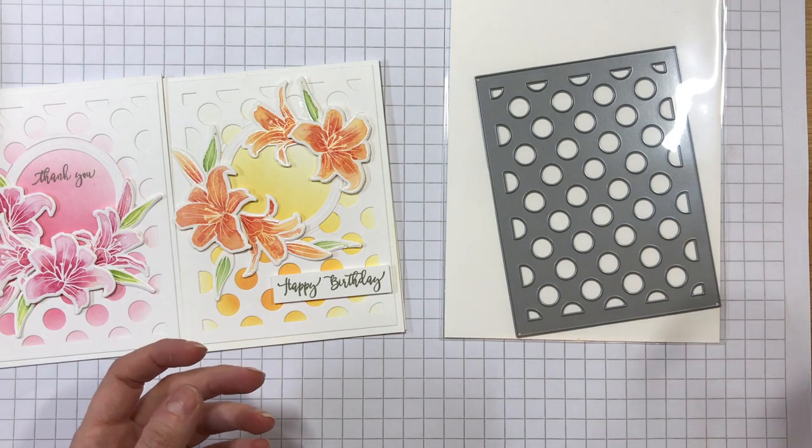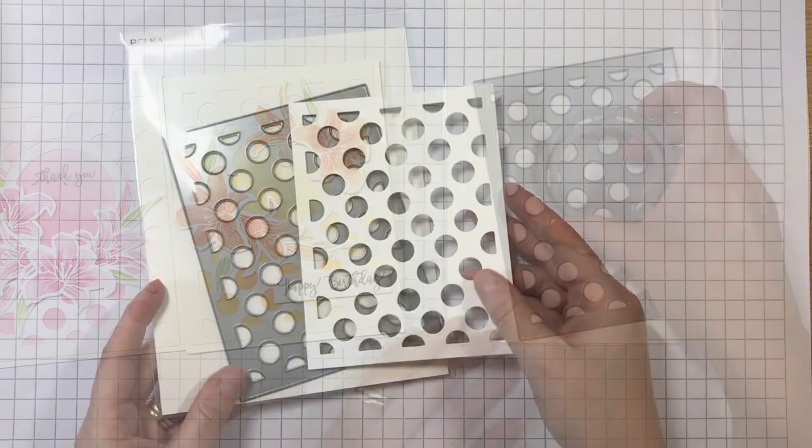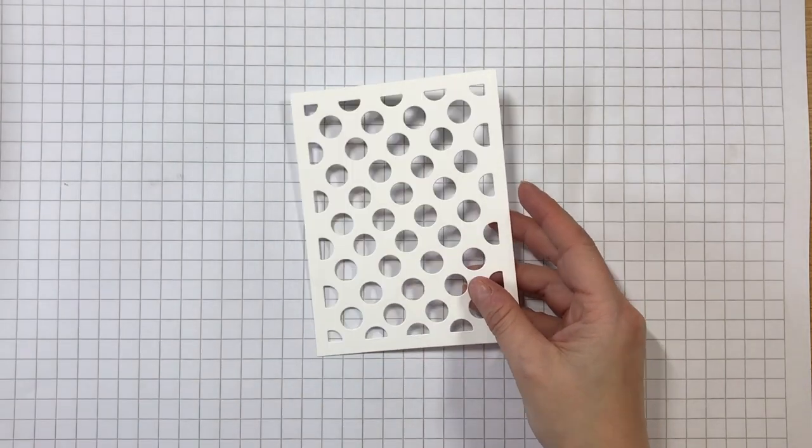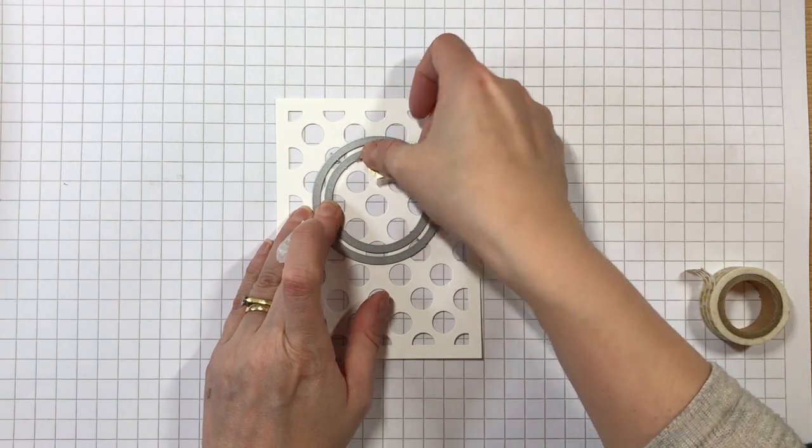In this first sample, I used two of the circle dies from the Burst die collection. I die cut the polka plate from white cardstock, then used the two circle dies and ran them through my Gemini to cut the opening or aperture in the panel.